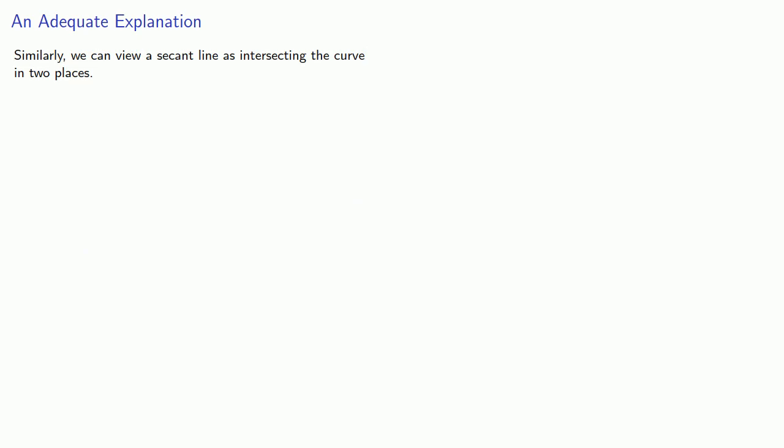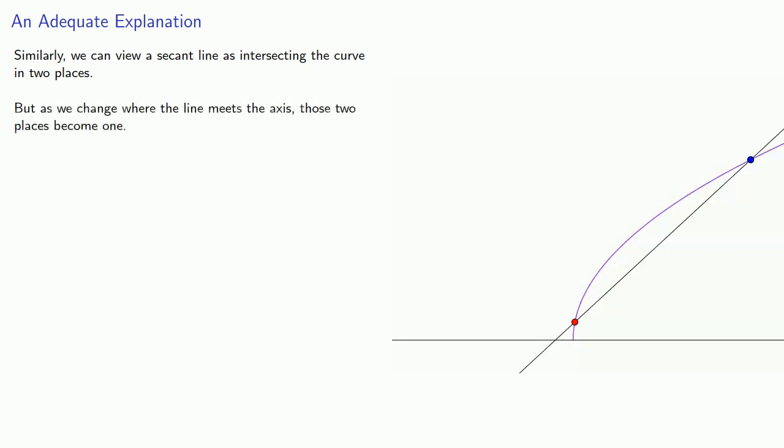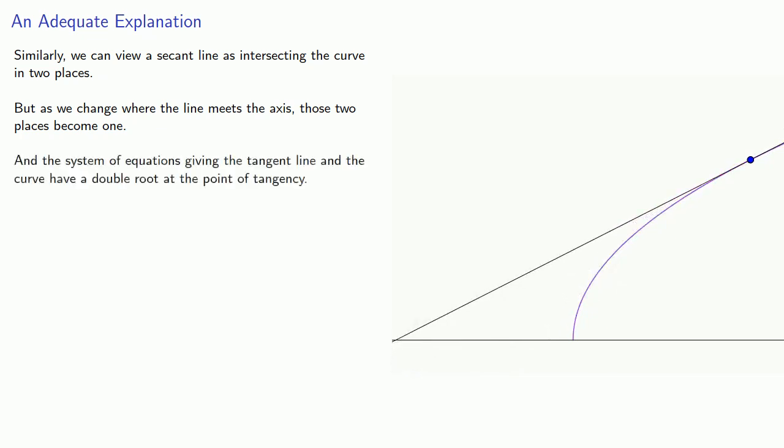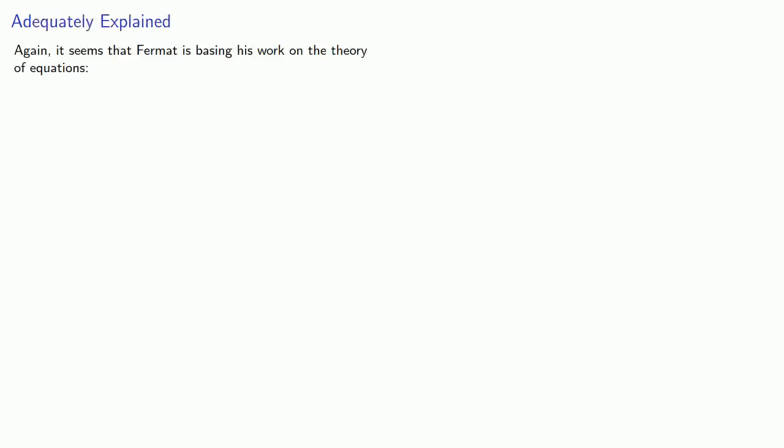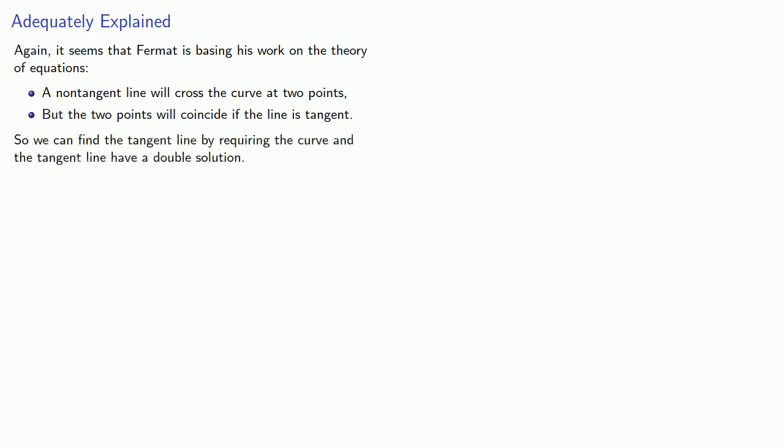Similarly, we can view a secant line as intersecting the curve in two places. But as we change where the line meets the axis, those two places become one, and the system of equations giving the tangent line and the curve have a double root at the point of tangency. And so again, it appears that Fermat is basing his work on the theory of equations. A non-tangent line will cross the curve at two points, but the two points will coincide if the line is tangent. So we can find the tangent line by requiring the curve and the tangent line have a double solution.